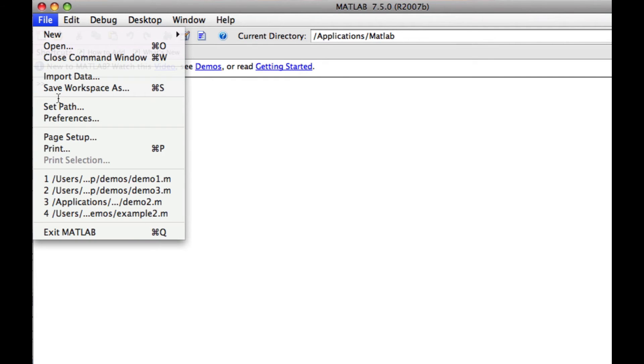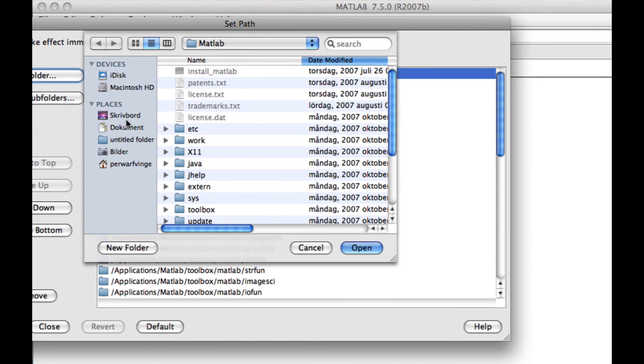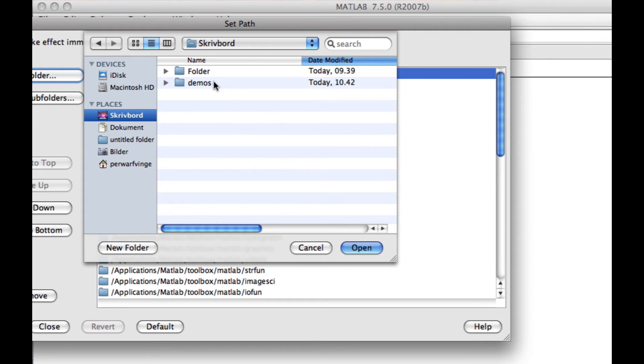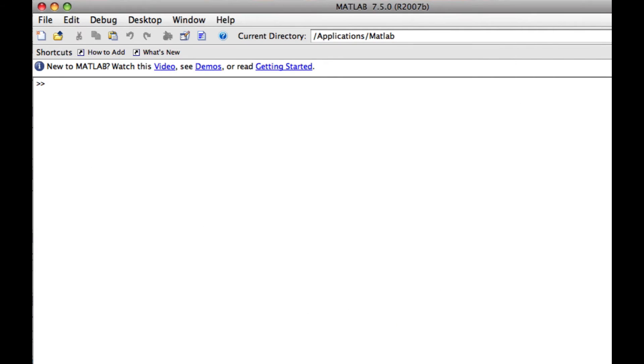And I can safely close the m-file window. And now I need to set the path. And I add a folder to my path, and that is on the desktop, and I find demos. And I open that, which means that I add it to the path from MATLAB. And I hide it. And I simply write demo1. And the instructions in the m-file are performed.